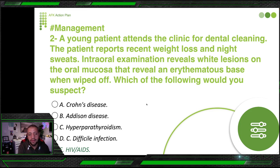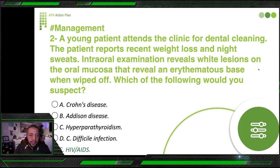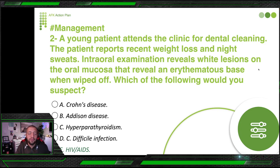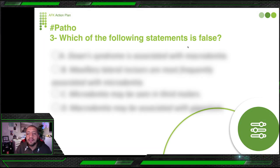We monitor immunocompromised patients for candida infection, night sweats, and weight loss to think about HIV/AIDS. Another condition that presents with weight loss and night sweats is TB — but the second part of the question would be different: the TB patient is coughing blood, has active infection, or is taking TB medication. In the exam you will face both simple questions and questions that require you to decipher information and connect dots to reach the correct answer.